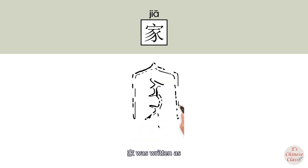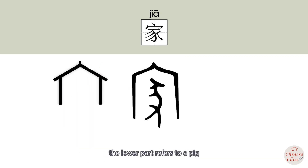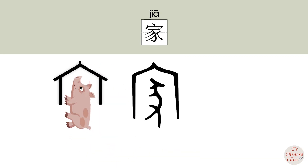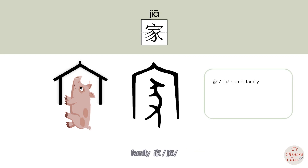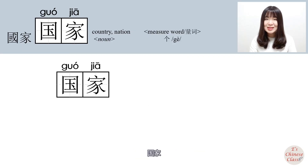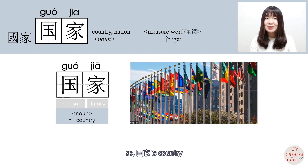In Ancient Chinese, 家 was written with the upper part referring to a house and the lower part referring to a pig, representing livestock. Raising livestock indicates settling down. So, the original meaning of 家 is family. 国 means nation, 家 means family, so 国家 means country.